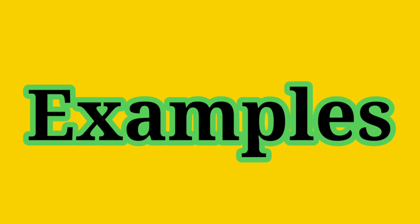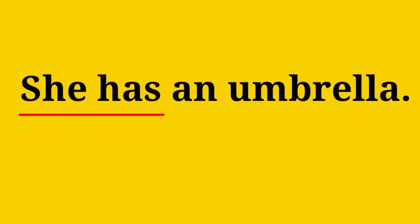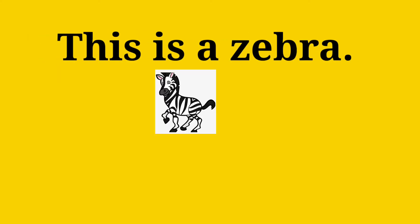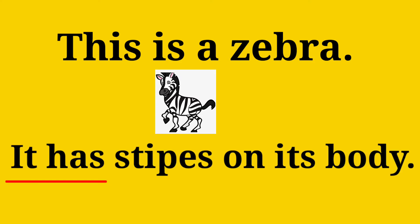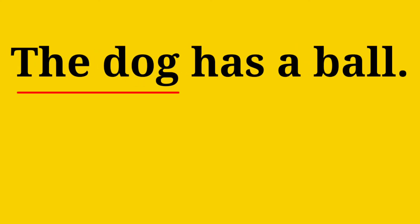A few examples are: She has an umbrella. He has a beautiful cap. This is a zebra. It has stripes on its body. John has books. The dog has a ball.